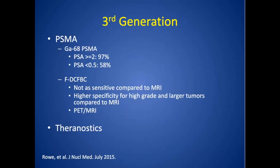The third generation is more long-term future — exciting stuff, but not too far away. The PSMA agents are the really exciting agents that will change the way we image patients. Gallium-68 is something you've probably all heard about — its sensitivity at low PSA values has been really good. At PSA levels less than 0.5, it showed a 58% detection rate, which is better than all prior radiopharmaceuticals.